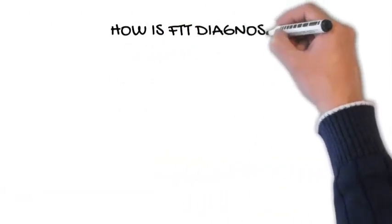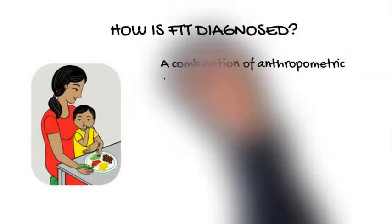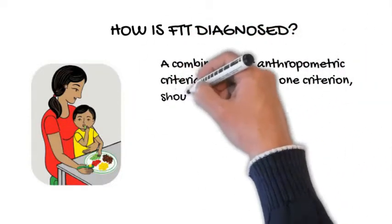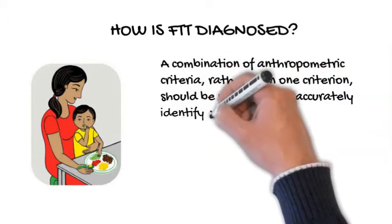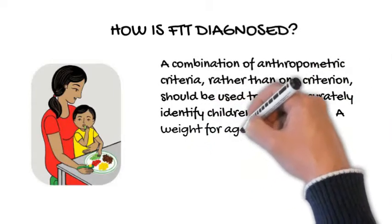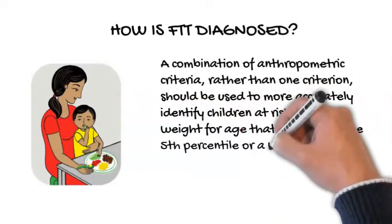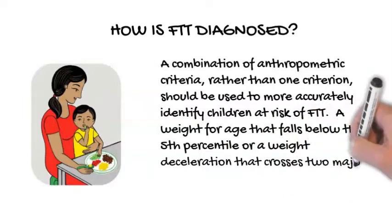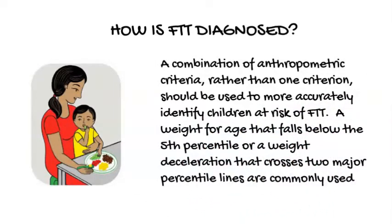How is FTT diagnosed? A combination of anthropometric criteria, rather than one criterion, should be used to more accurately identify children at risk of FTT. A weight for age that falls below the 5th percentile, or a weight deceleration that crosses two major percentile lines, are commonly used.